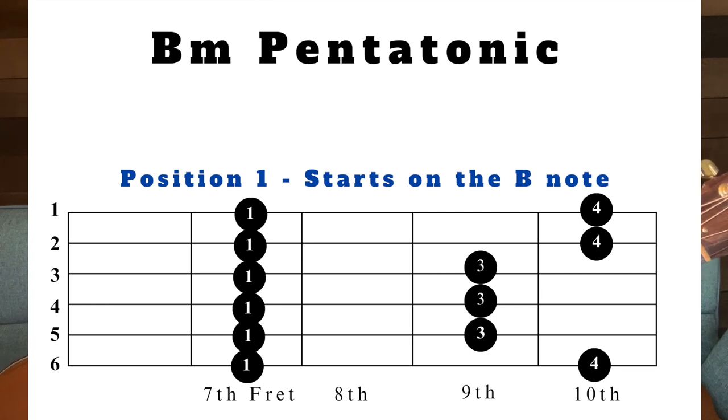We now do position one pattern, but we start it on the seventh fret. The position one pattern for the A minor pentatonic scale started in the fifth fret — same exact pattern shifted to the seventh fret, and now we're in the key of B minor. Then from there, you would do the second position, third position, and so on.